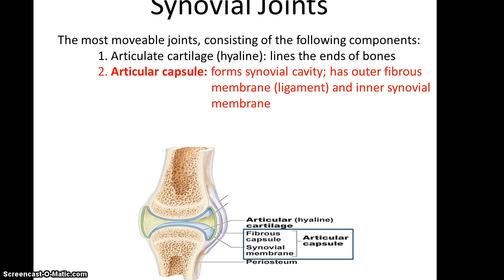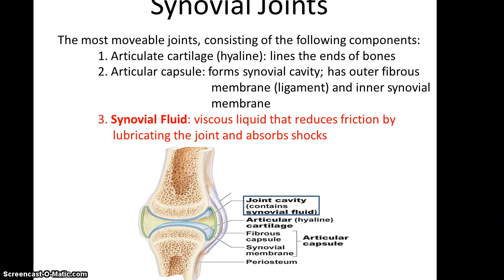Also found in synovial joints is the articular capsule, which is what actually forms the synovial cavity — the space that's going to be filled with fluid. This has two layers: the outer fibrous membrane, which is basically a ligament because it goes from one bone to another, and the inner synovial membrane that helps provide the fluids for the synovial joint. It forms with the articular cartilage to create this complete capsule structure. Within the cavity is the synovial fluid, a viscous liquid that reduces friction by lubricating the joints and also helps absorb shocks.